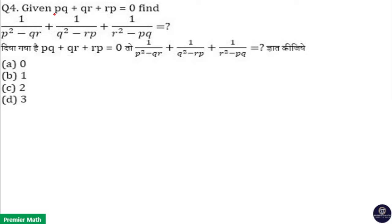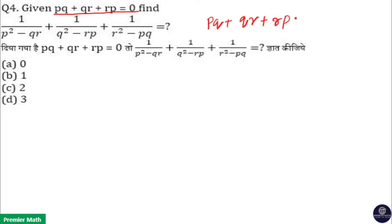Given pq + qr + rp = 0, find 1/(p² - qr) + 1/(q² - rp) + 1/(r² - pq). Here, since pq + qr + rp = 0, that means minus qr is equal to pq + rp.